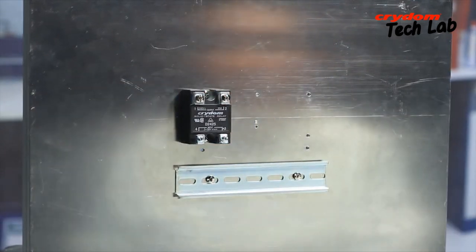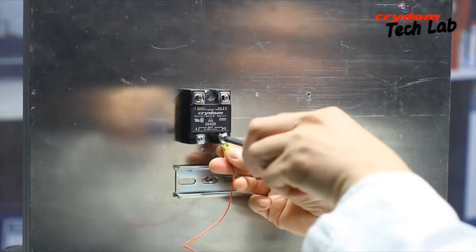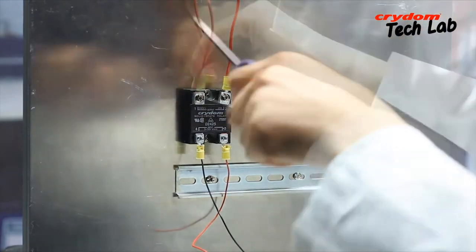Once mounted, the control and load wires can be attached to the SSR terminals. As with the mounting screws, the terminal screws should be torqued to the specified values.